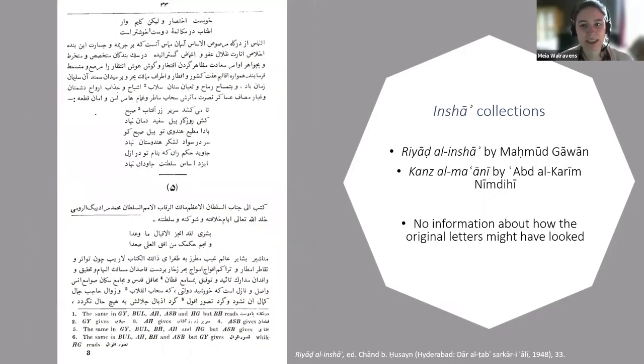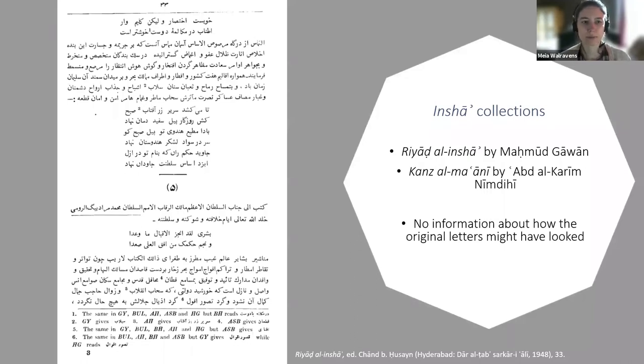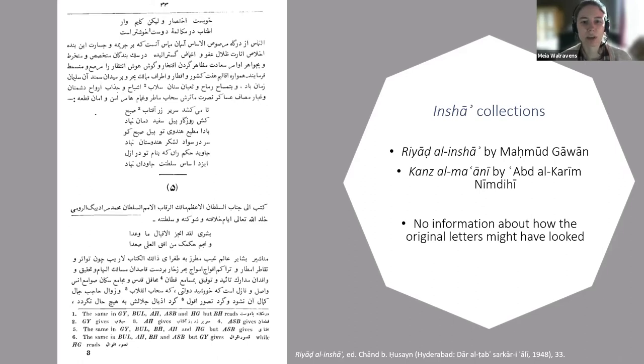We are more fortunate as far as literary collections are concerned — also called Inshah collections. These are books where an author pieces together a number of shorter texts, mainly letters, arranging them one after another with a general introduction and subheadings before every new letter included. There are two Bahmani letter collections available today: one is Riyad al-Inshah by Mahmoud Ghavan, and the other is Kanz al-Ma'ani by Abdelkari Nimdihi.